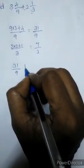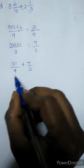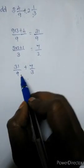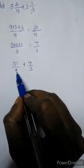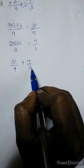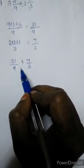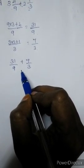31 by 9, 7 by 3. Now can we add this? No. Why? Because 9 and 3 we are having different denominators. So we have to convert into same denominator. That means like fraction.